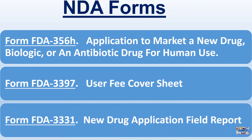Form FDA 3331: New Drug Application Field Report. It is submitted by the drug manufacturer after receiving information that the drug product has a labeling mistake, microbial contamination, or chemical, physical, or other changes during drug distribution.